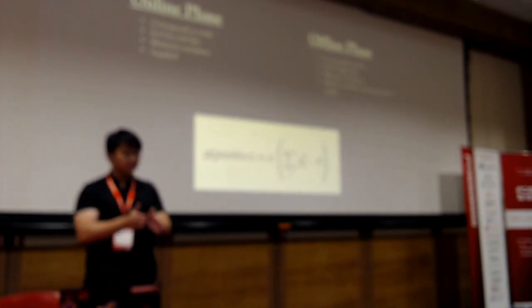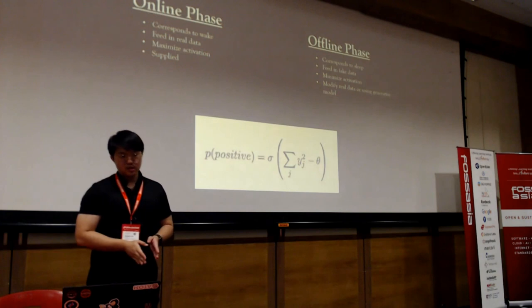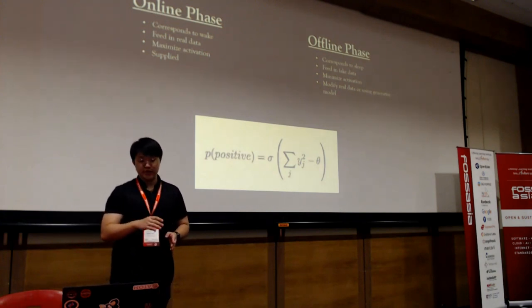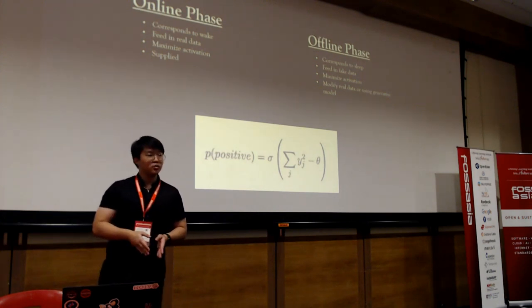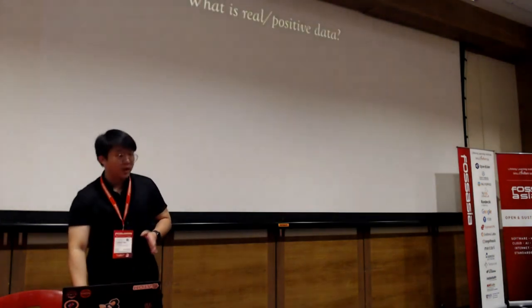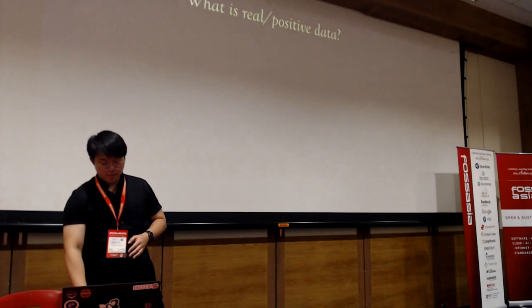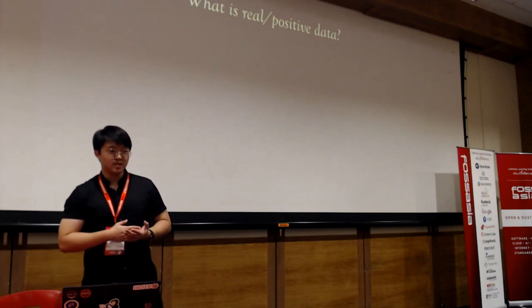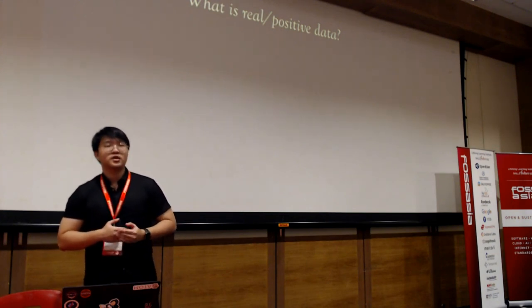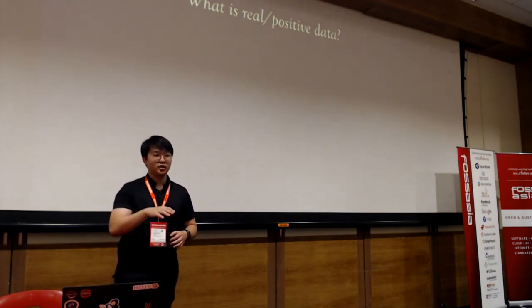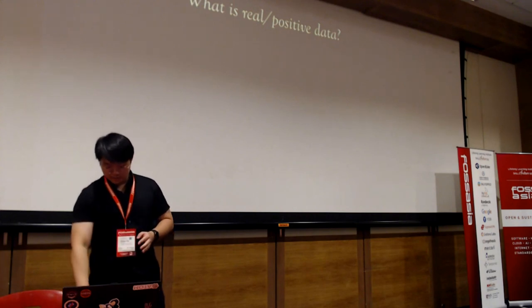The probability function for how the model differentiates real from fake data works by subtracting a threshold hyperparameter from the goodness value and feeding it into a logistic function, which gives the probability of the data being real. So what is real data?